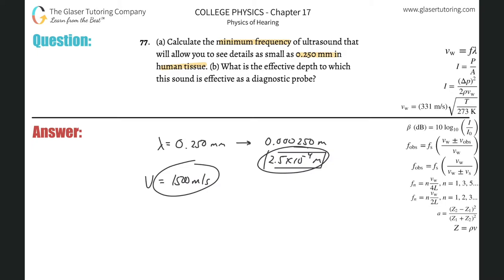In order to find the frequency, if you know the wavelength and the velocity, you know that the velocity of a wave is equal to the frequency multiplied by the wavelength. So that's 1500 meters per second equals the frequency times the wavelength, which is 2.5 times 10 to the minus fourth.